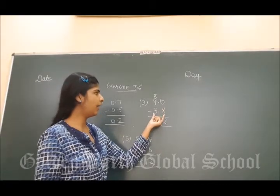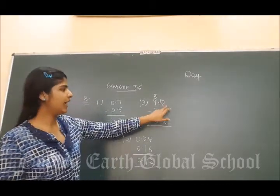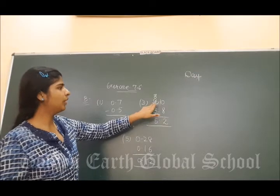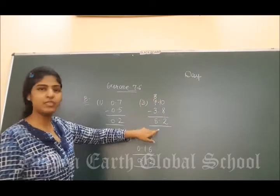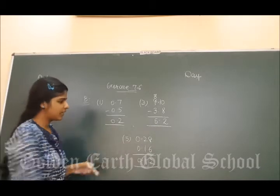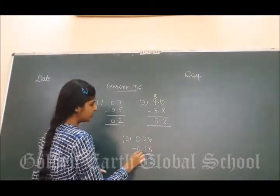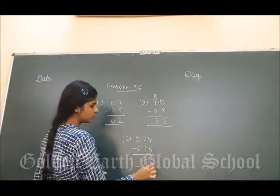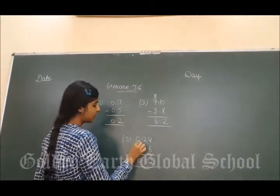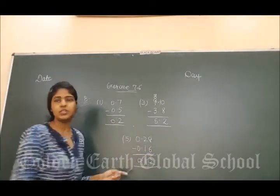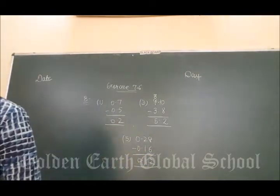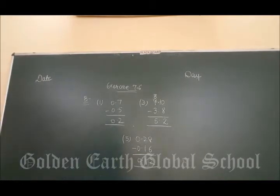Third is 9.0 minus 3.8. Take the carry here, 10 minus 8 is 2, borrow, 9 minus 8 minus 3 is 5, so 5.2. Fifth part: 0.28 minus 0.16. 8 minus 6 is 2, 2 minus 1 is 1, 0 minus 0 is 0. So, in the same way, simple subtraction. Second and fourth part, you have to do by yourself. So, now, exercise 7.7.